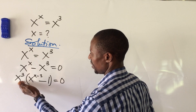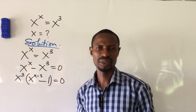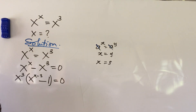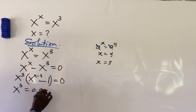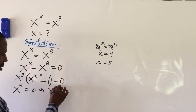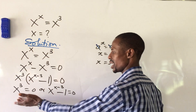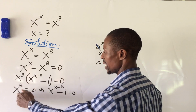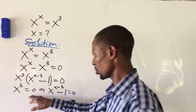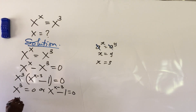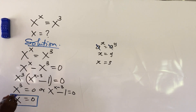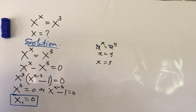Applying the zero product rule, we now have two equations: x to the power of 3 equals zero, or x to the power of (x minus 3) minus 1 equals zero. From x to the power of 3 equals zero, we take the cube root of both sides to get x equals zero. This is the first solution to our equation.